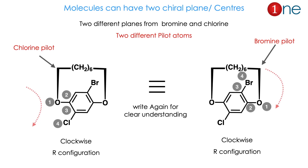For molecules with two chiral planes — for example, one plane established by chlorine and another by bromine — we treat them like two chiral centers and write each configuration separately. For the chlorine plane, number 1, 2, 3, 4: clockwise gives R. For the bromine plane, choose the bromine pilot atom and number accordingly: clockwise also gives R. So a compound can have many chiral planes, each with its own pilot atom and configuration.